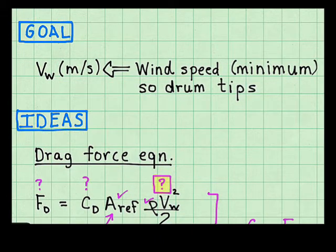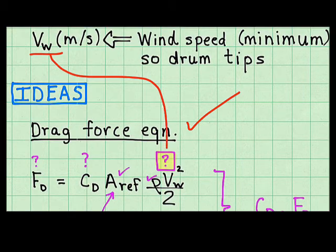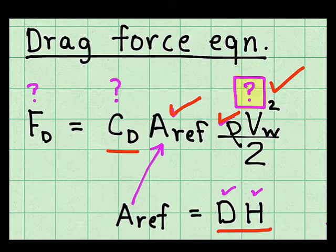My goal is the minimum wind speed so that the drum tips over. To reach my goal, I started with the drag force equation because the goal appears right here. In the drag force equation, the wind speed is my goal. Density is known. The reference area is unknown, but I can quickly see that it's the diameter times the height of the drum. The coefficient of drag is unknown, and the drag force itself is unknown. So I have two new goals.